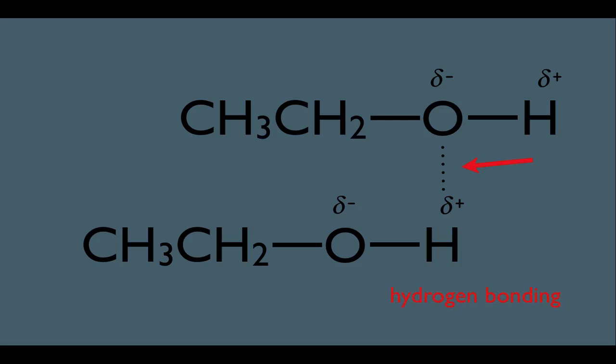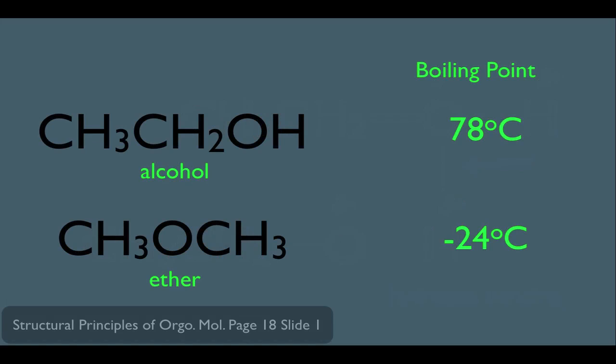To illustrate how much stronger hydrogen bonding is, look at these two molecules. Notice they have the same number of carbons, hydrogens, and oxygens — but look at their relative boiling points. Clearly the alcohol has a much higher boiling point than the ether. The ether doesn't have hydrogen bonding because its hydrogens are all covalently bonded to carbons, not to the oxygen. So the ether doesn't participate in hydrogen bonding, which is why its boiling point is much less than the alcohol's.